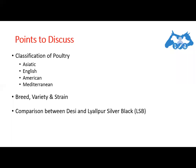Next is the American class, which like the English class has a medium body size and can be used for both egg and meat purpose. They also lay brown-colored eggs. Their earlobe color is red and skin color is yellow — as noted, white skin color is only present in the English class. Like all classes except Asiatic, they do not have any feathers on their shank.